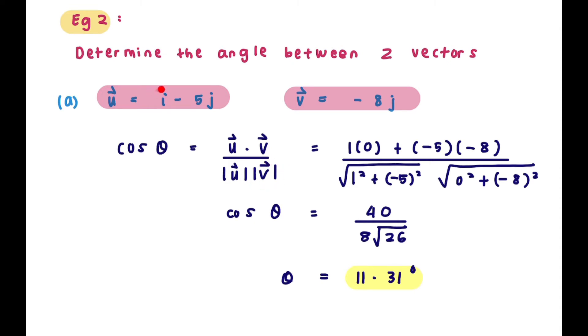So let's find u dot v. It's just 1 times 0 plus minus 5 times minus 8 over. Now let's find magnitude of u. This is just square root of 1 squared plus minus 5 squared and then multiply with magnitude v which is square root of 0 squared plus minus 8 squared.